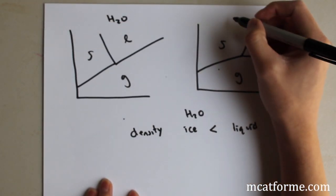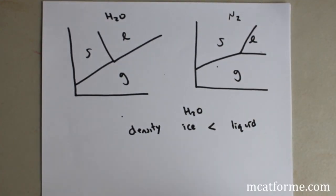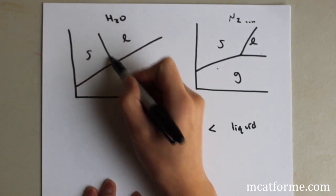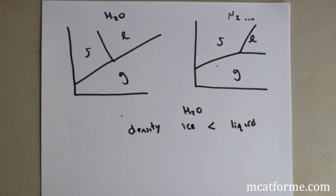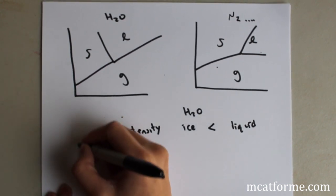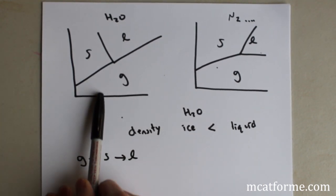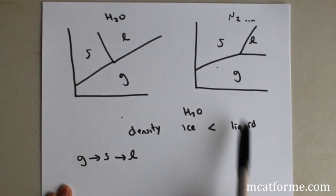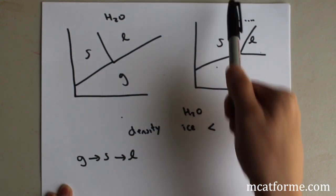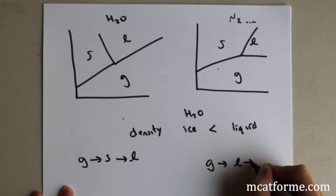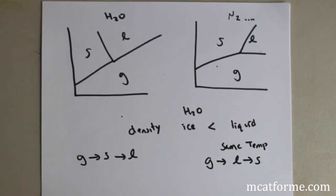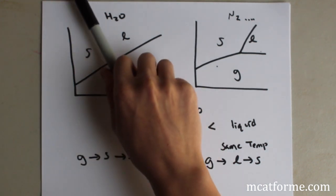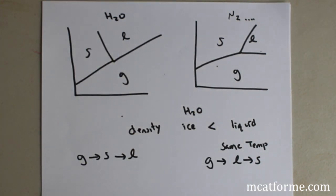For H2O, compared to most other compounds like N2, the solid-to-liquid boundary has a negative slope, whereas for nitrogen it has a positive slope. The implication is that for water, if temperature is held constant, you can go from gas to solid to liquid. For nitrogen, you cannot go from gas to solid and then to liquid at the same temperature — you can go gas to liquid to solid, but that's different. So if asked which compound can change from gas to solid to liquid, the answer is water, due to its unique density difference between solid and liquid phases.